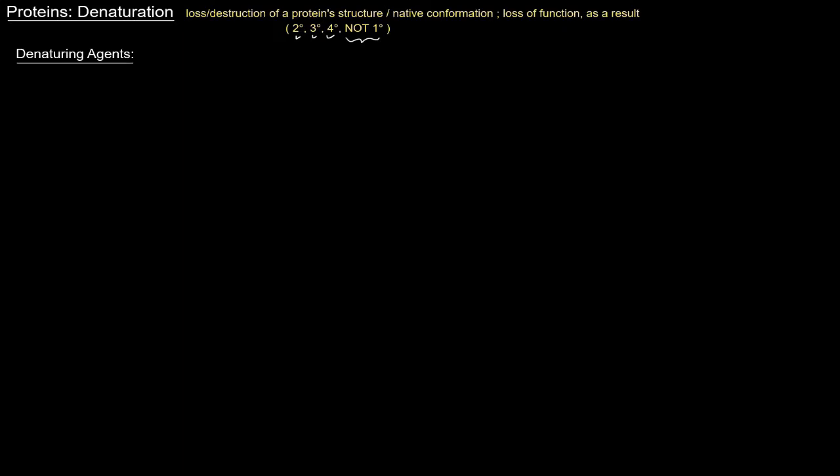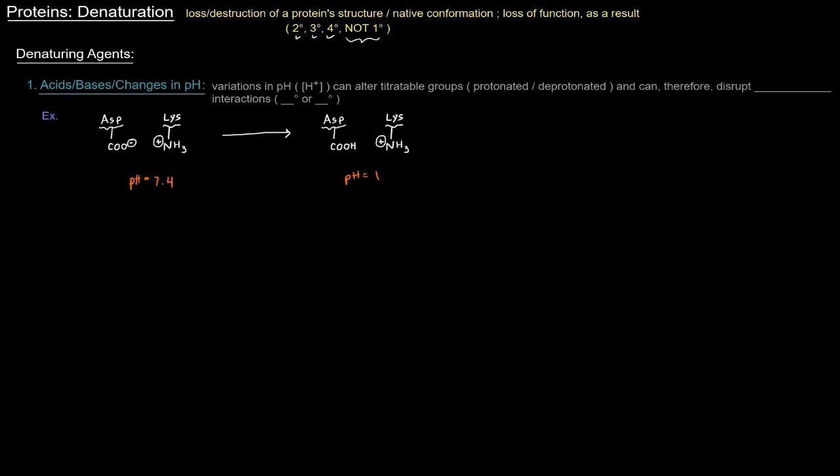The first one: acids or bases or basically just changes in pH. That's because variations in pH or hydrogen ion concentration can alter titratable groups, whether they're protonated or deprotonated, and therefore can disrupt electrostatic interactions. Electrostatic interactions, which of course hold together tertiary and quaternary structure. If you have, for example, an aspartate and a lysine that are next to each other at a pH of 7.4, the aspartate is deprotonated and negatively charged, the lysine is protonated and positively charged, there's an attraction between them. These opposite charges attract. They want to come closer together. But, let's kind of exaggerate the point here.